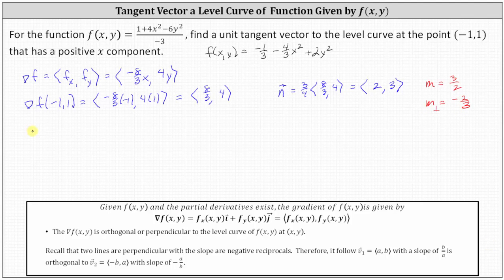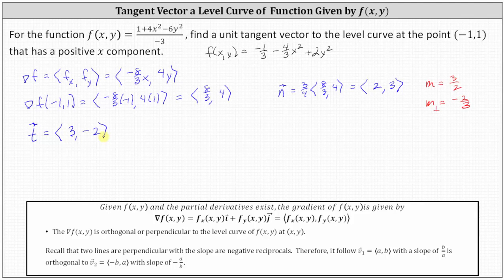So the slope of the tangent vector to the level curve at the point negative one comma one must be negative two thirds. One possibility for a tangent vector with slope negative two thirds is when the y component is negative two and the x component is positive three. This is a good choice because we're looking for a unit tangent vector in which the x component is positive — we would not want to negate those components, as that wouldn't give a positive x component.